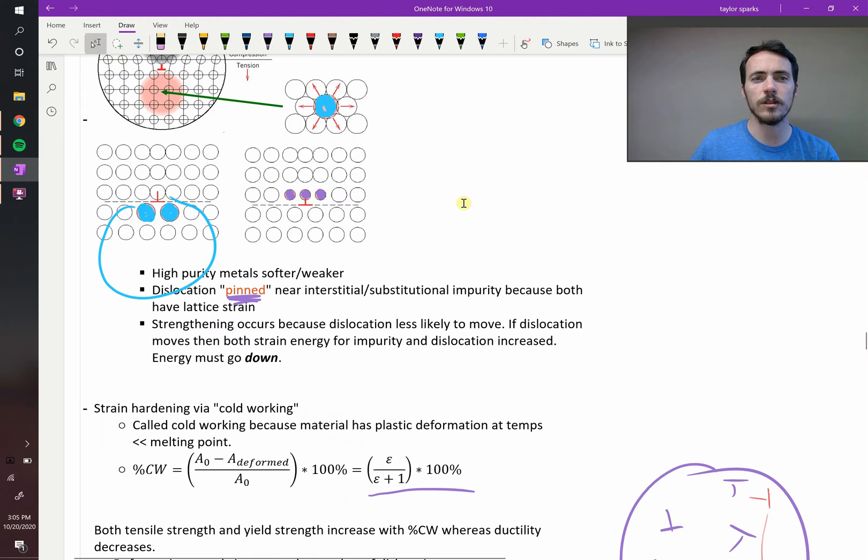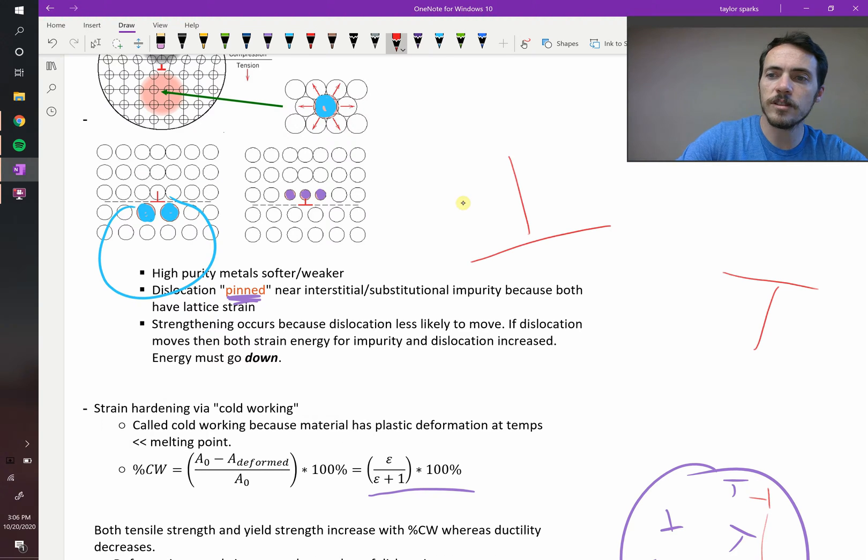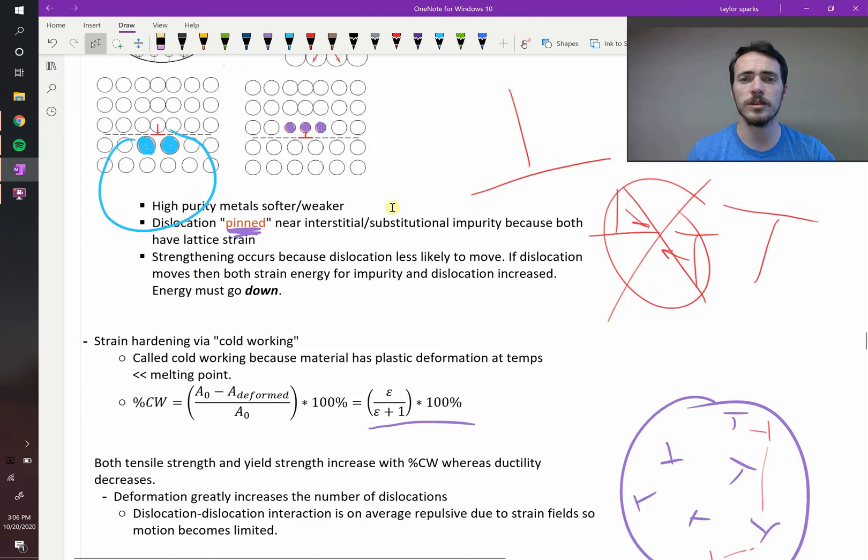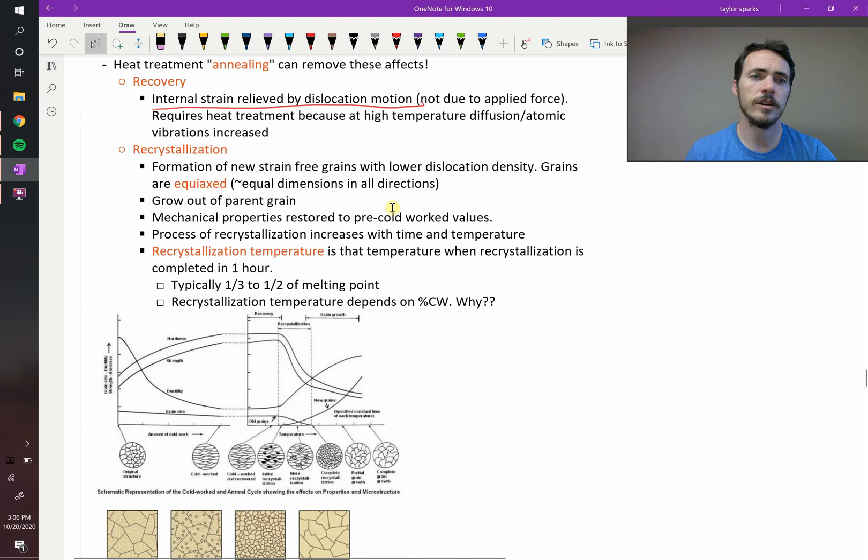If you think of these impurities, all these dislocations, you need the dislocation over here and this dislocation to be able to orient themselves such that now they're lined up like that, and then they can recombine. They feel this attractive force, they can recombine and then annihilate. And that all takes motion, that's atomic motion, which means you're relying on diffusion, atoms moving around, and that happens at high temperatures. So it relies on high temperatures.